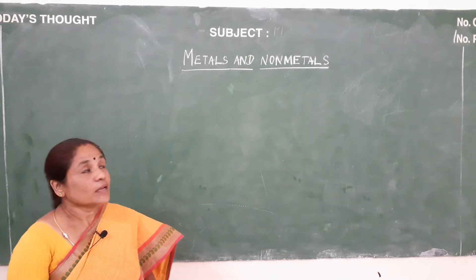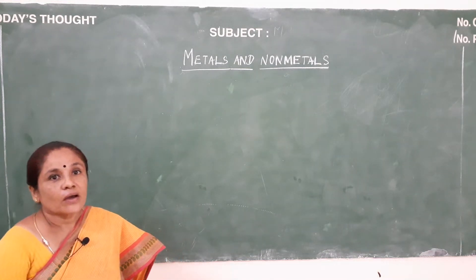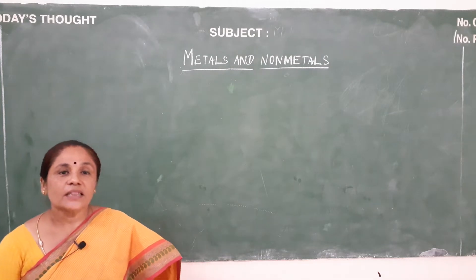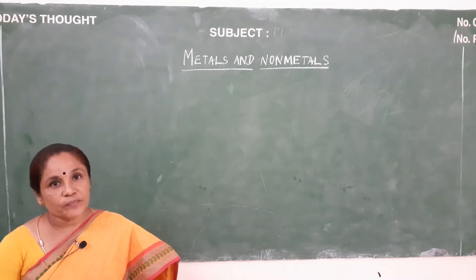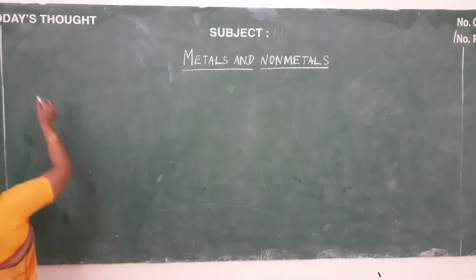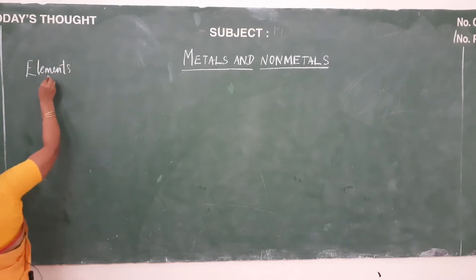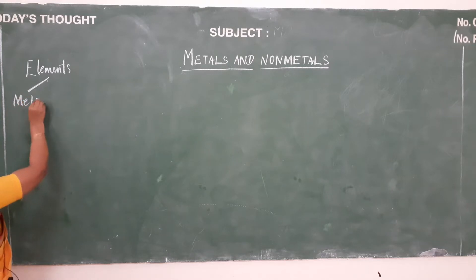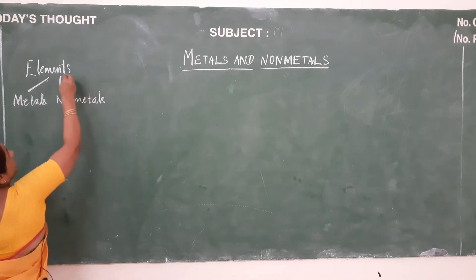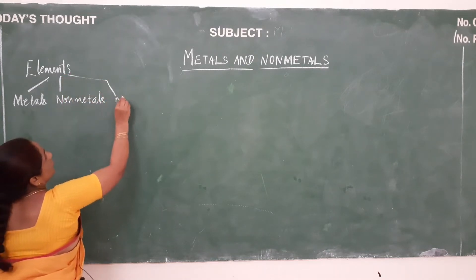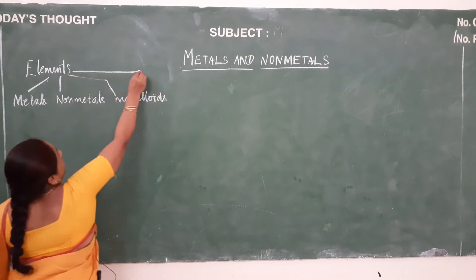Welcome students. Today we shall see about metals and non-metals in detail. We see many things around us; they are made up of different materials, some are hard and some soft. Elements in general are classified into metals, non-metals, metalloids, and noble gases.